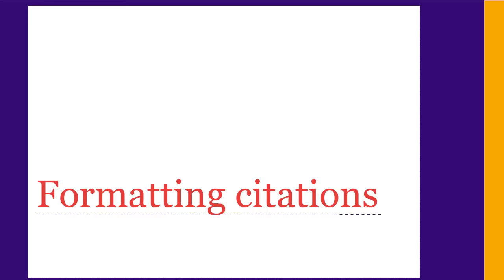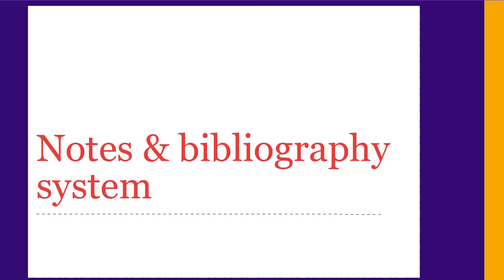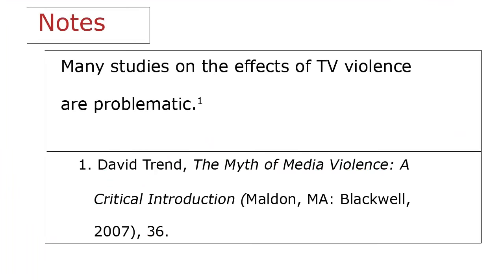Now let's look at how to format citations using Chicago Style. Chicago Style consists of rules on how to combine and format information into a citation. There are two different ways to do this: author date and notes and bibliography systems. First, let's look at the notes and bibliography system, which is the most popular. In this system, you need to insert a footnote or endnote at the end of each sentence in your paper where you refer to a source.